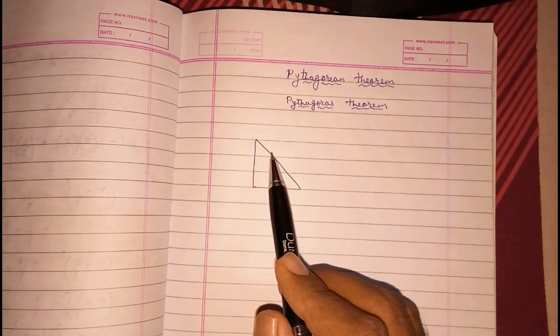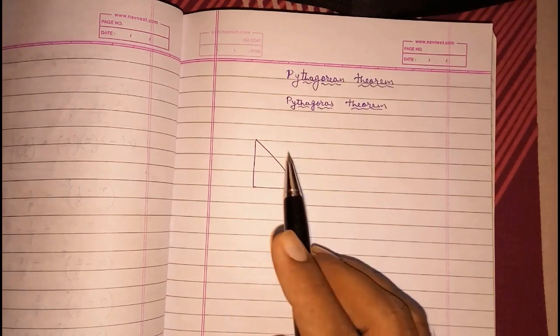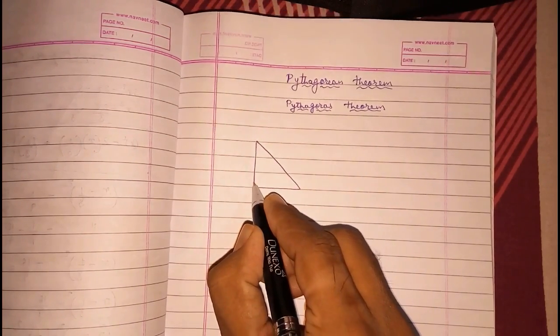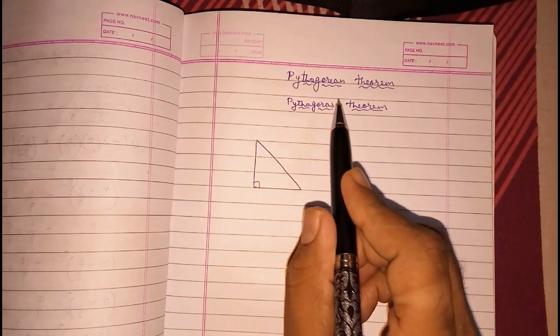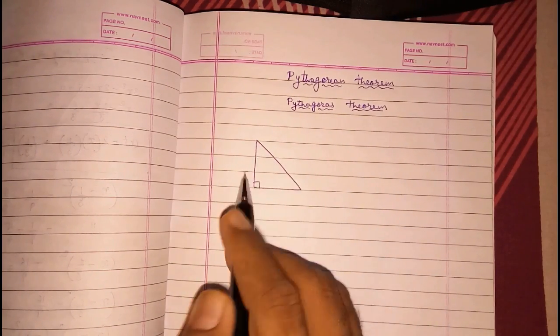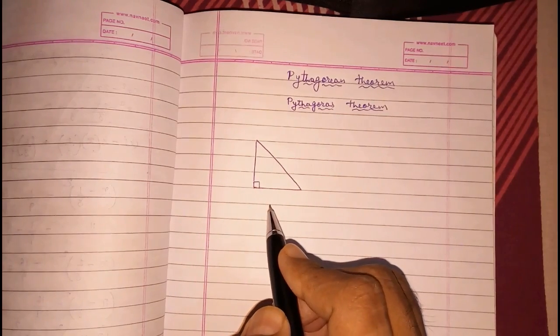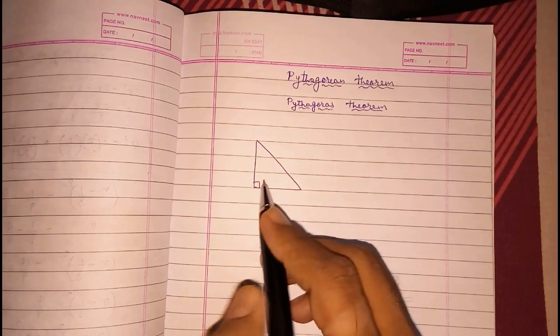Look here, this is a triangle, but I had not done a right angle. Now I am doing it. Look here, this Pythagoras theorem or this trick is only used when a triangle is a right angle triangle.